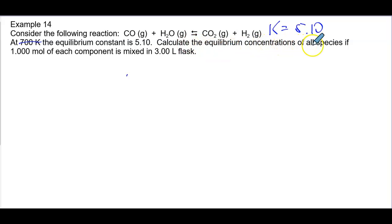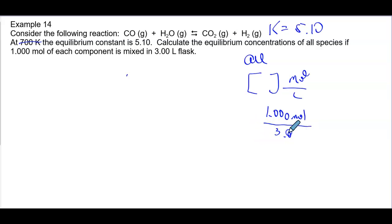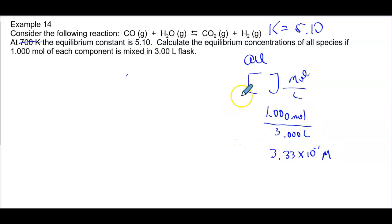The problem says to calculate the equilibrium concentration of all species if one mole of each component is mixed in a 3-liter flask. So we have initial concentrations. That means concentration equals moles over liters: 1.000 moles over 3.00 liters. So we get 3.33 times 10 to the negative first M.